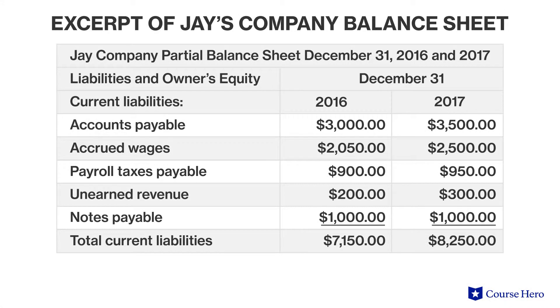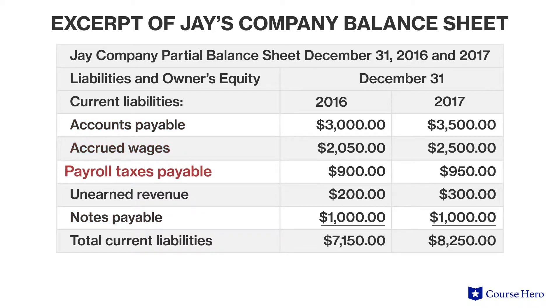Examples of current liabilities typically include accounts payable, short-term notes, wages payable, taxes payable, and unearned revenue.